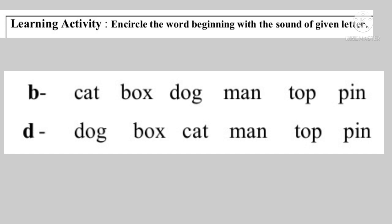This word is that the noun is called B. This is the word B, or the noun is called B. As for the word, B is called B — box. Box.